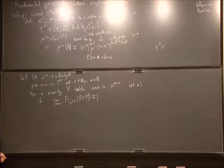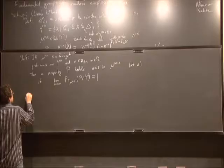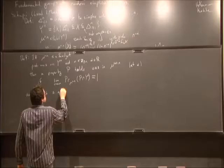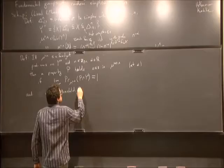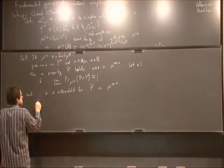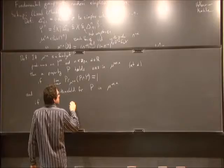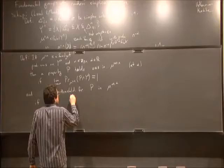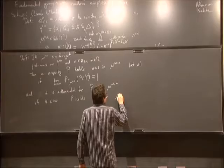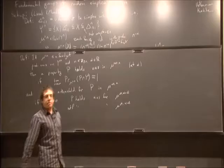The other relevant notion is a threshold. Alpha is a threshold for property P in this measure space μ_{∞,α} if: when I subtract epsilon from it, P is asymptotically almost surely false, and when I add epsilon, P is asymptotically almost surely true. So for all ε > 0, P holds AAS for μ_{α+ε} and not-P holds AAS for μ_{α-ε}.